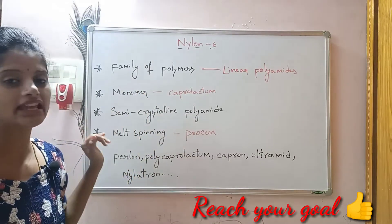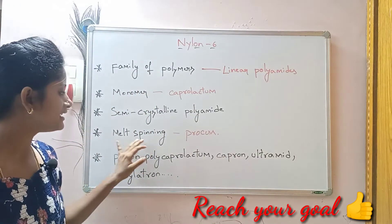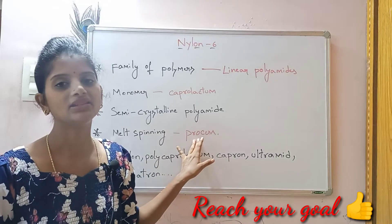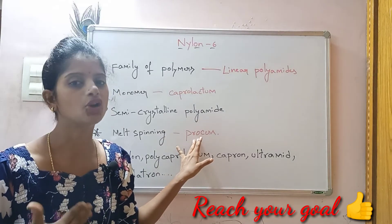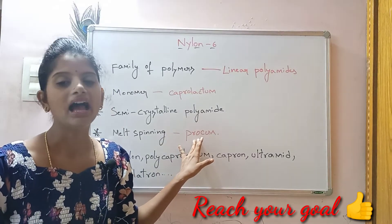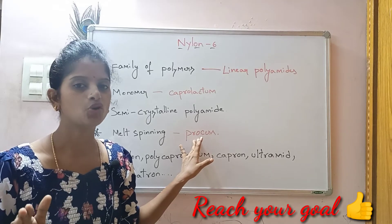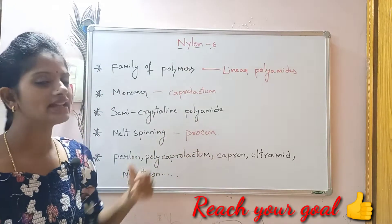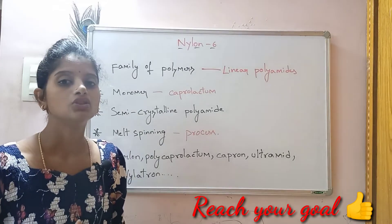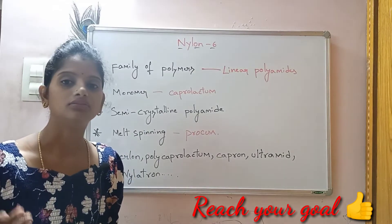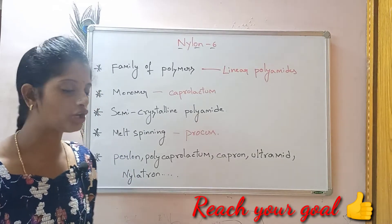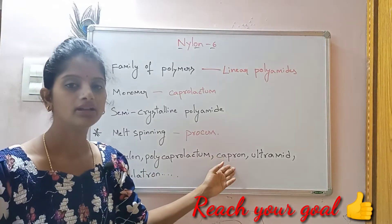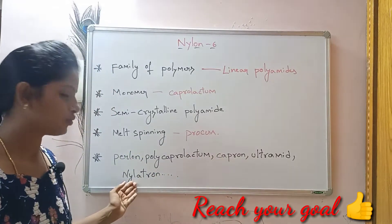Nylon 6 is produced by the melt spinning process. Nylon 6 is sold under numerous trade names like Perlon, Polycaprolactam, Capron, Ultramid, and Nylatron.